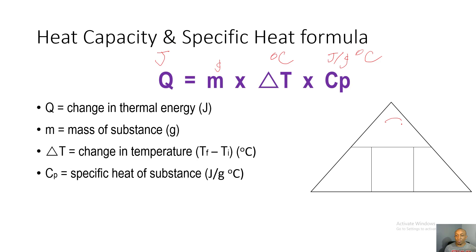Another way to use this formula is with a triangle: Q at the top, over mass times change in temperature times specific heat. To solve for Q, cover it and you get M times delta T times specific heat. To solve for specific heat, cover it and you get Q divided by mass times delta T. To solve for mass, cover M and you get Q divided by delta T times specific heat.